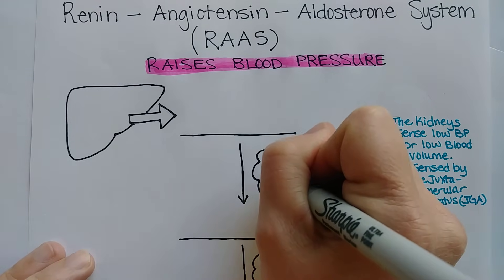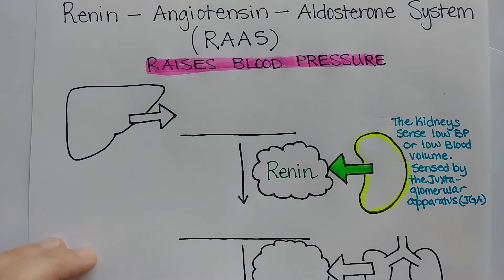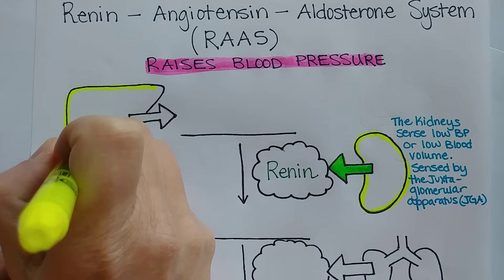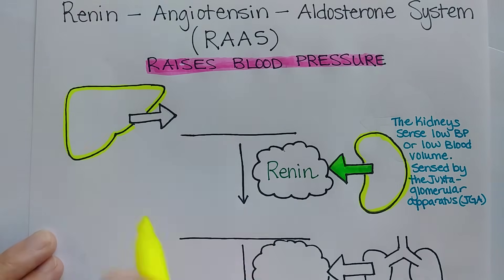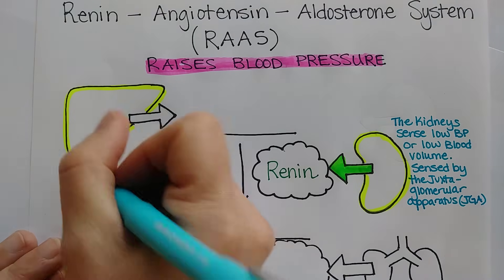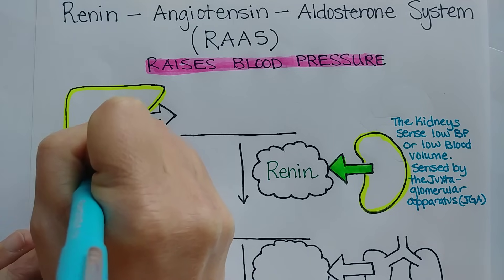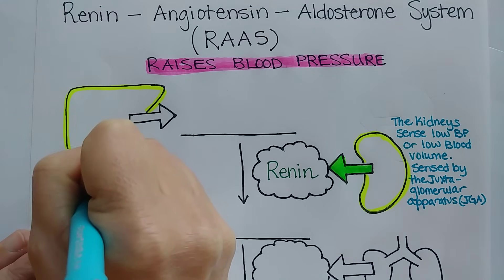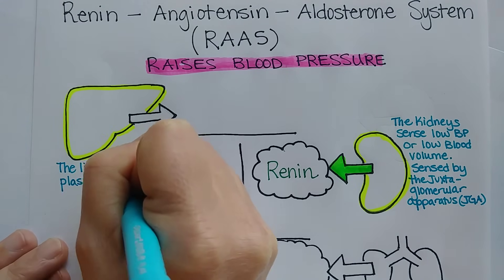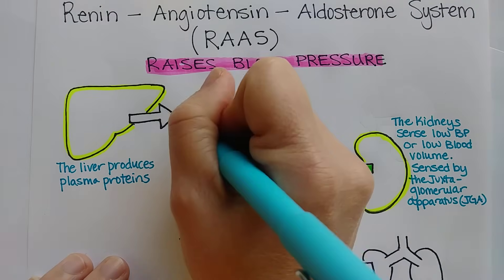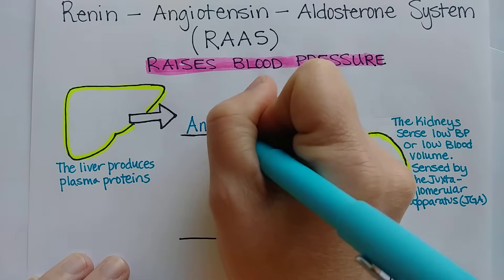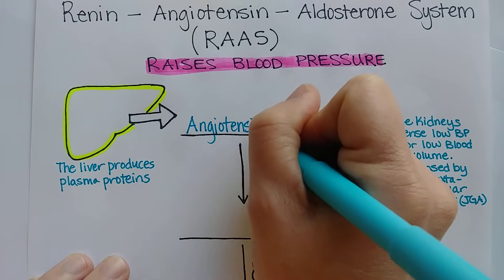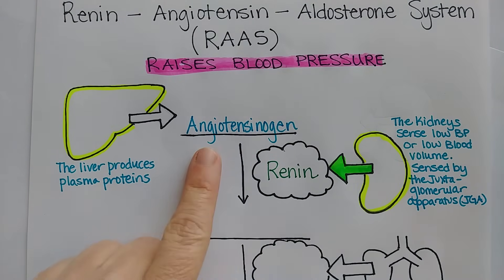It's called renin because the word renin literally means kidney. Meanwhile, your liver has been making all the plasma proteins that you need. One of these plasma proteins is called angiotensinogen. You might remember that the most common one the liver makes is albumin, but the one we care about in this video is called angiotensinogen.